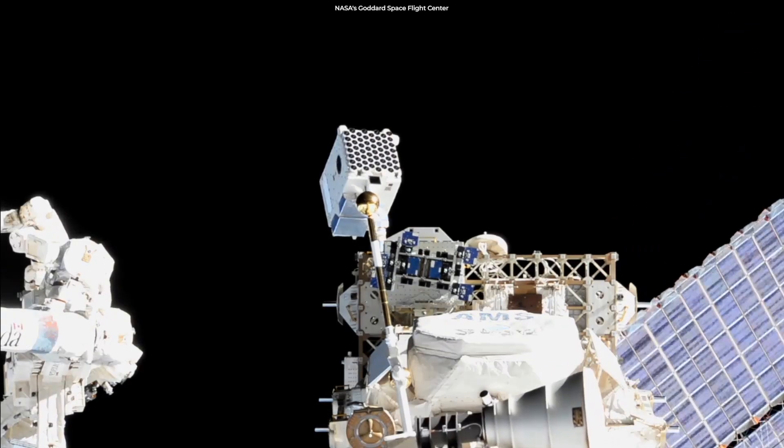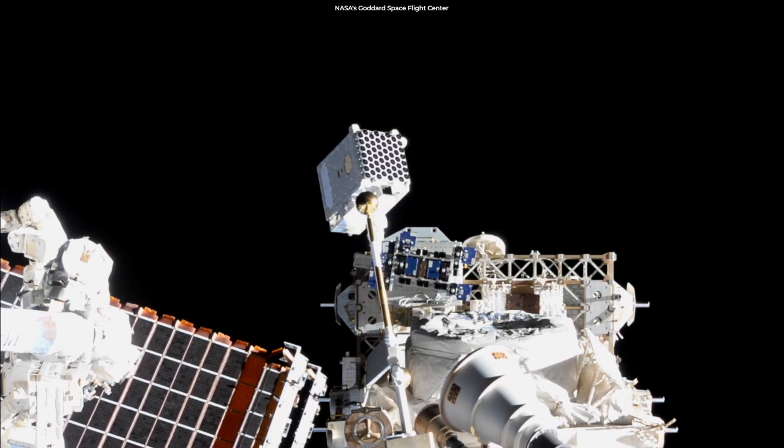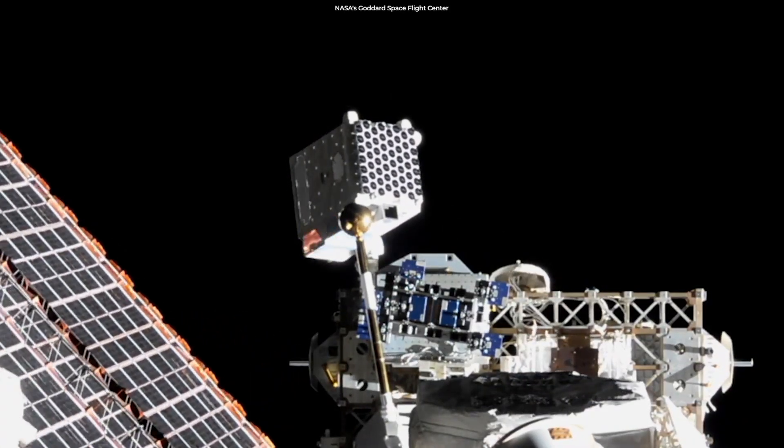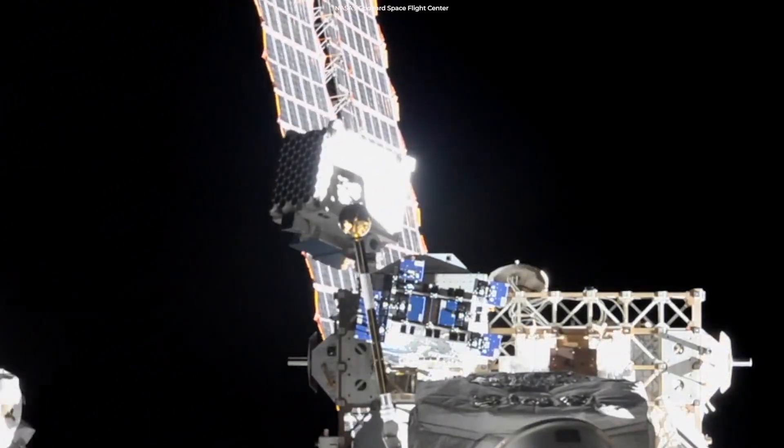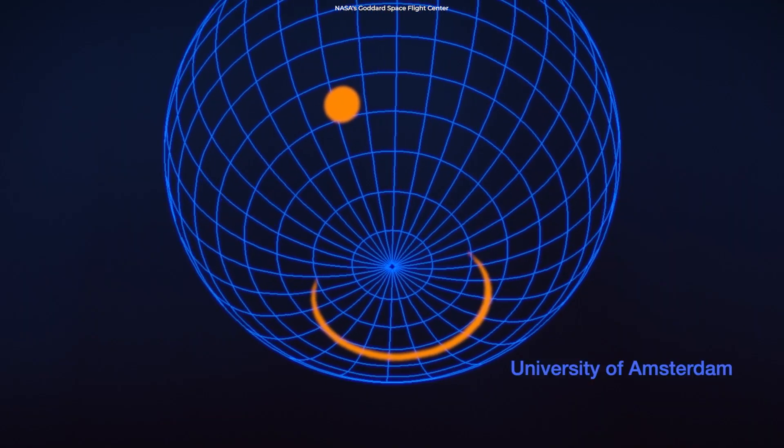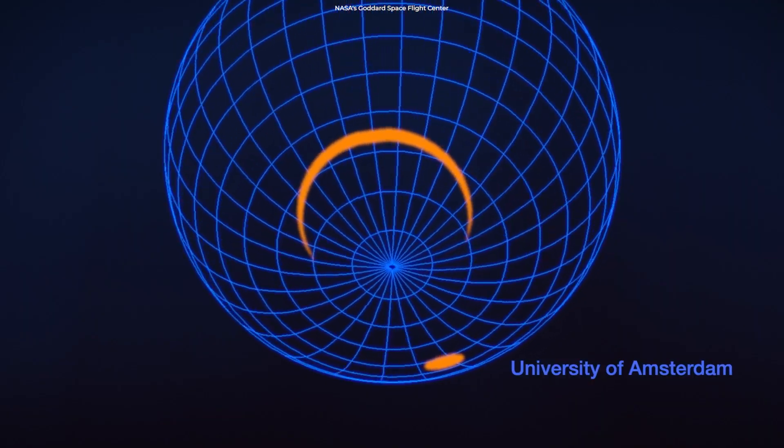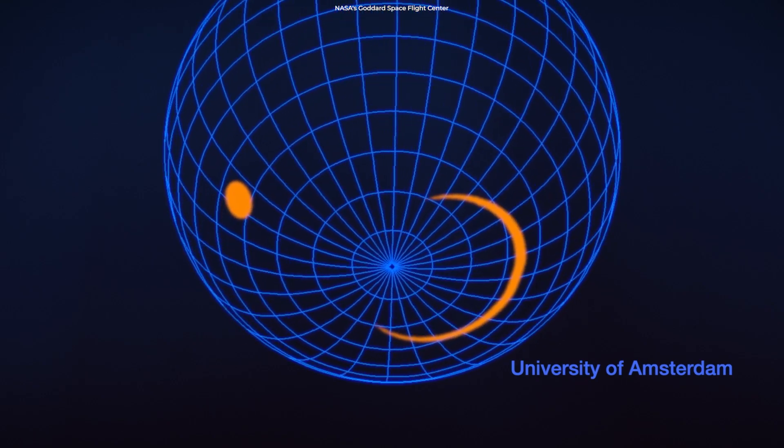But when scientists observed J0030 using NICER data obtained from July 2017 to December 2018, they found two or three of these hotspots in the Southern Hemisphere, but there were none in the Northern Hemisphere.